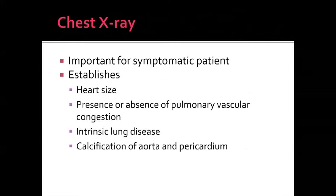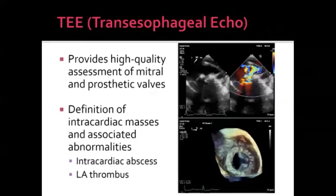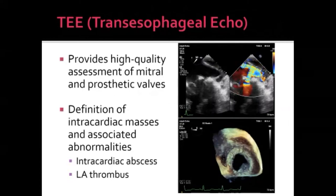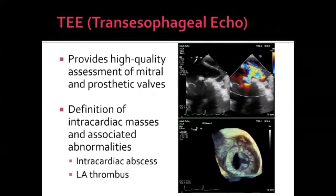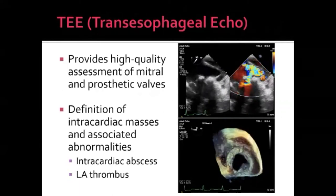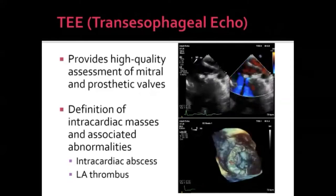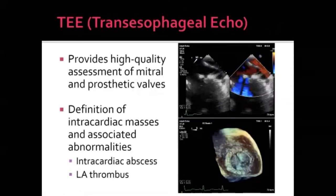Chest X-ray is important in symptomatic patients — it provides clues about heart size, pulmonary vascular congestion, intrinsic lung disease, and aortic or pericardial calcification. TEE provides high-quality assessment of posterior valves, particularly the mitral valve and prosthetic valves, and is especially useful for regurgitant or paravalvular lesions, masses, or thrombus within the heart.